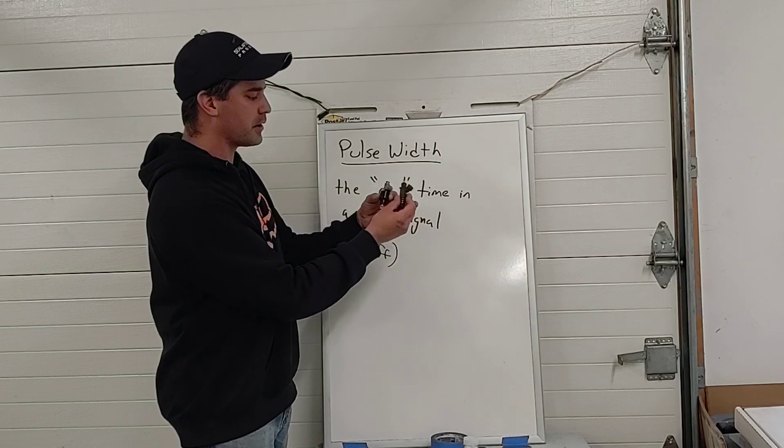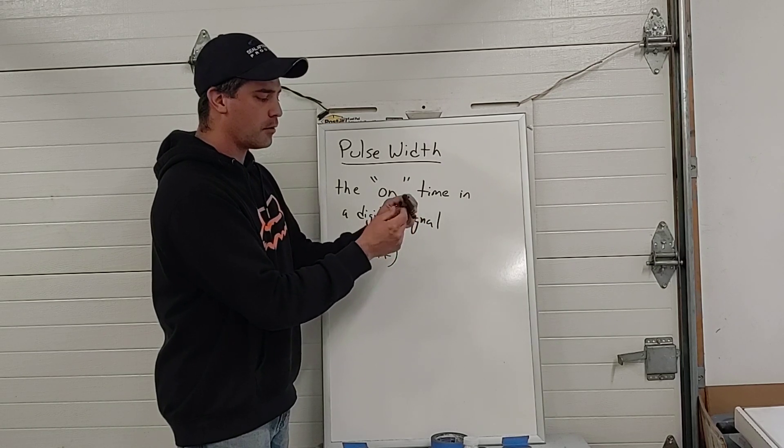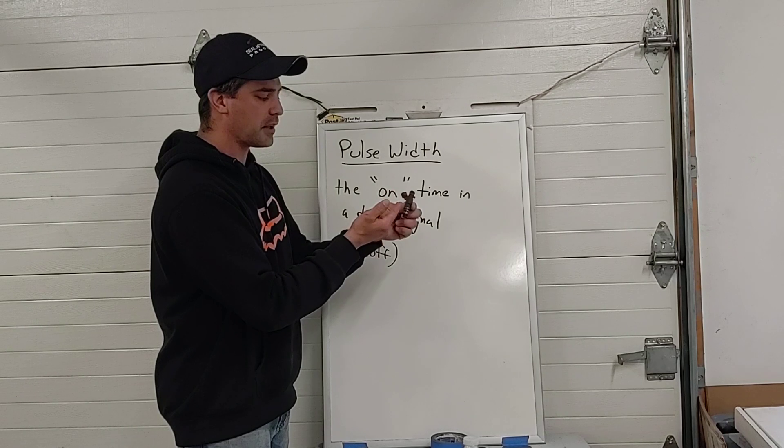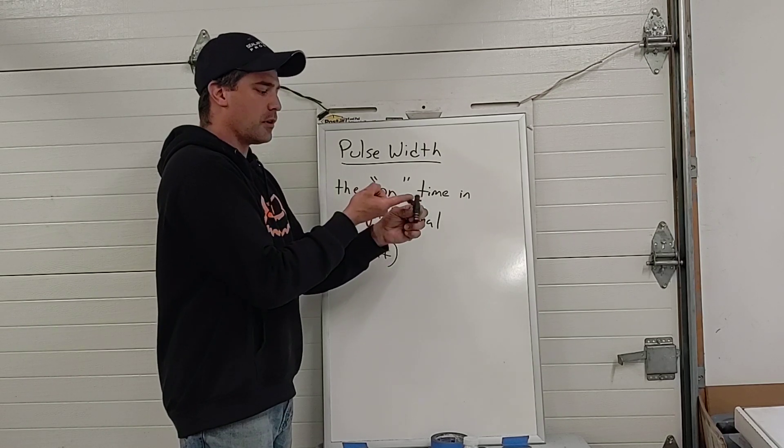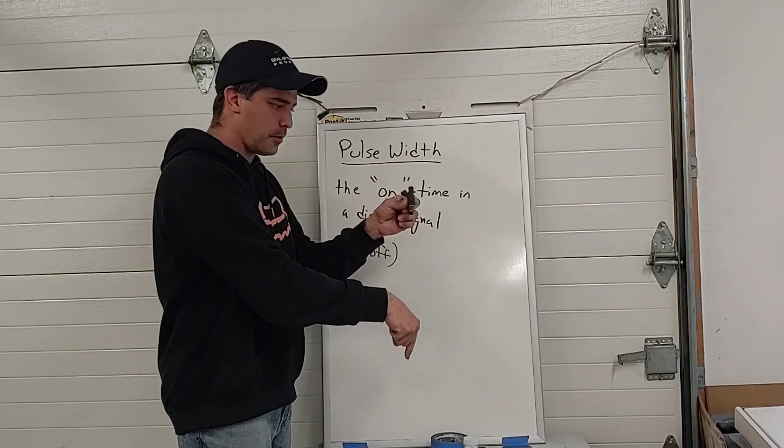So these little fuel injectors here, a couple of different kinds, have solenoid winding inside. When power is sent to this, when current flows through that winding, a magnetic field is created and it will lift a little pintle inside and let fuel flow in the top and spray out the bottom.